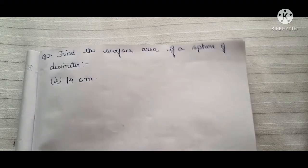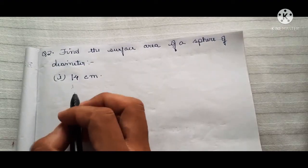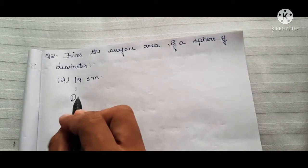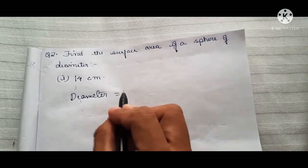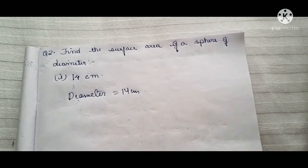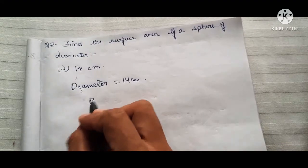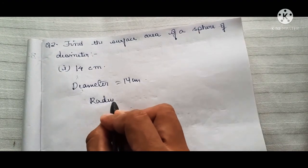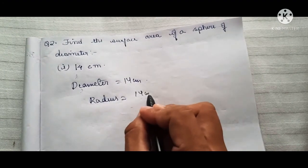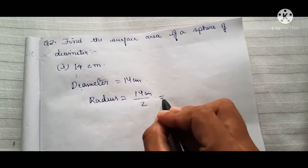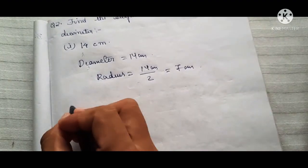Here, the diameter is 14 centimeters, and we need to convert it into a radius. So if we convert into a radius, it will be 14 divided by 2, and we get 7 centimeters.